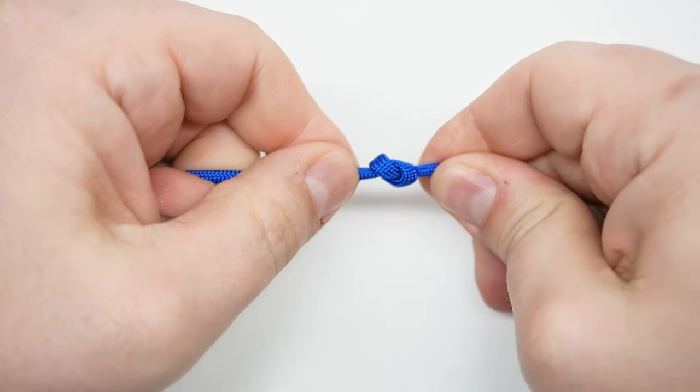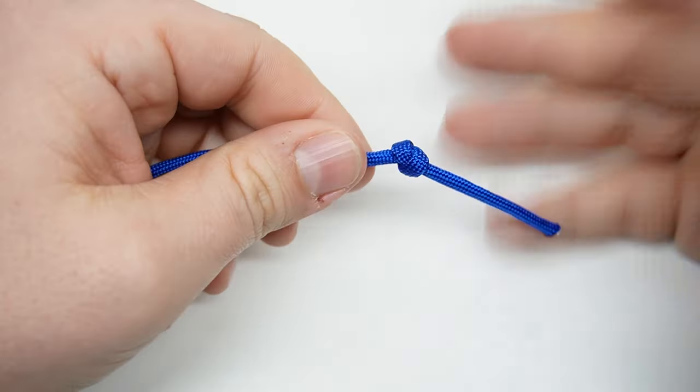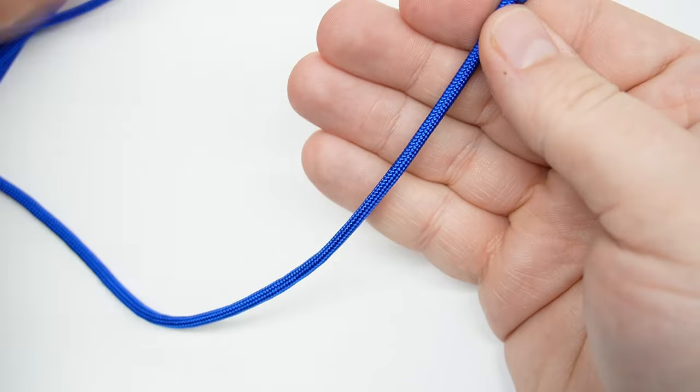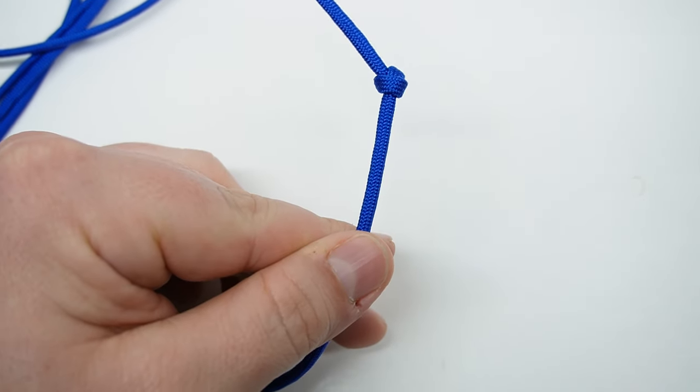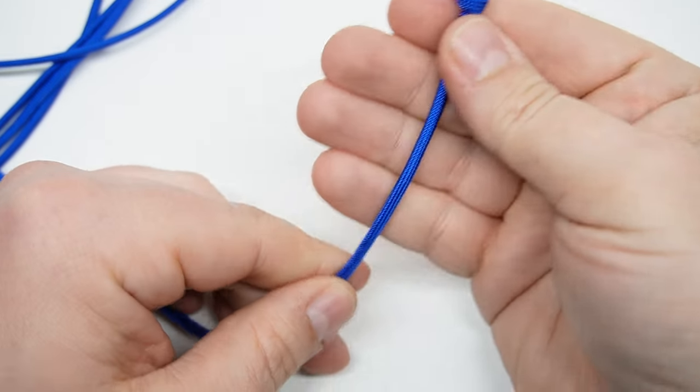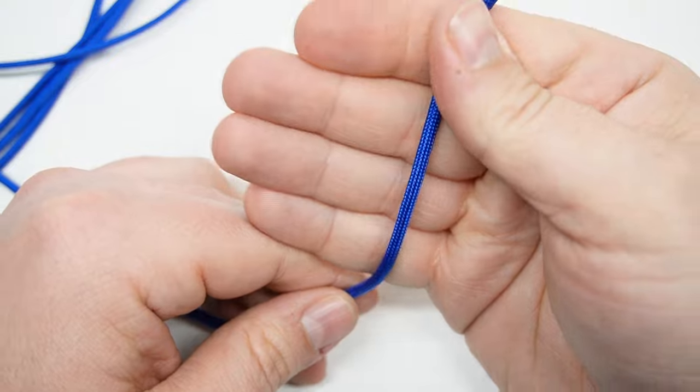Now you want to put the knot at the top of your hand like this. We're just going to wrap around your hand two times or one full pass.